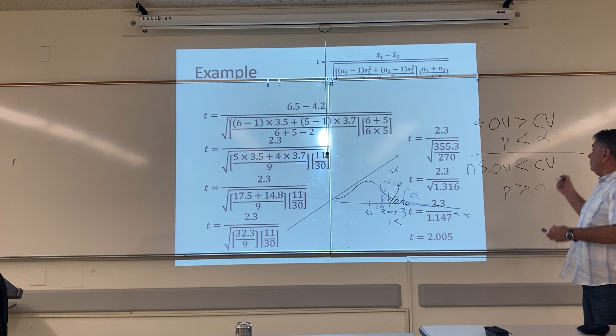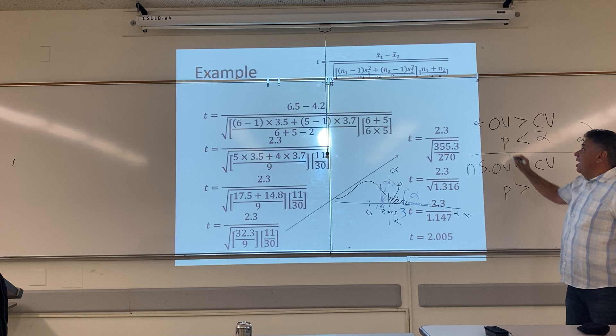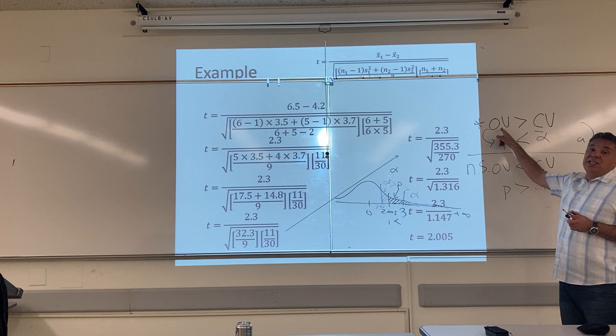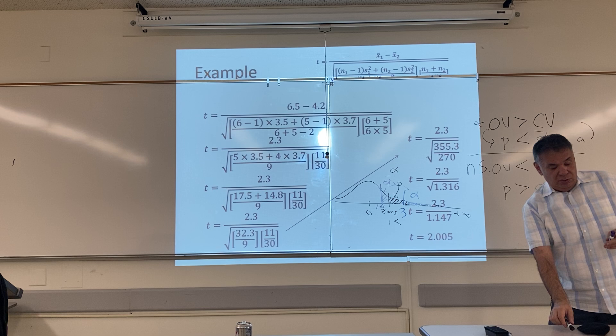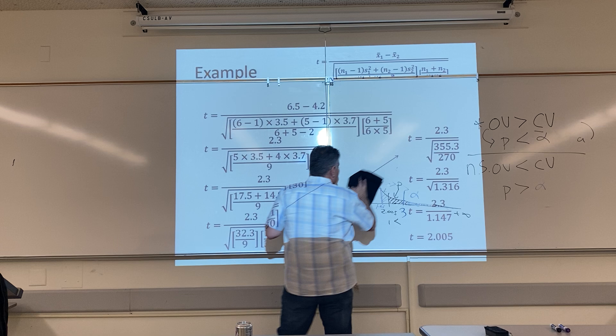Alpha starts with A. A is closer to the letter C, and O is closer to the letter P. P is the size of the area that the OV makes. Alpha is one of the things we use to look up what the CV is. So I have to show you how to look up the critical value.